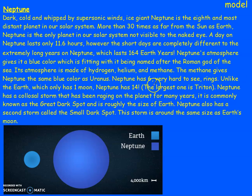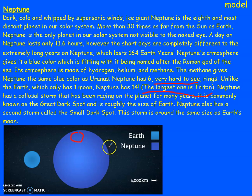I've used a subordinate clause there — adding information in between the sentence. Unlike the Earth, which only has one moon, Neptune has 14, and I've used parentheses to add that the largest one is called Triton. Neptune has a colossal storm — I did have 'big' but I used a thesaurus, found a synonym, and up-leveled it — which has been raging on the planet for many years. It's commonly known as the Great Dark Spot and is the same size as Earth. It also has a second storm, only slightly smaller, called the Small Dark Spot, which is around the same size as the moon. So Neptune has storms the size of Earth and our moon — which is just insane.